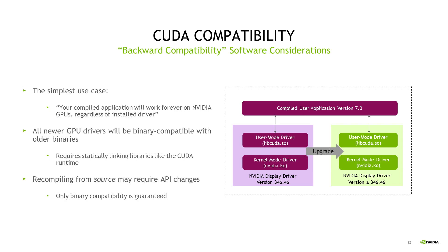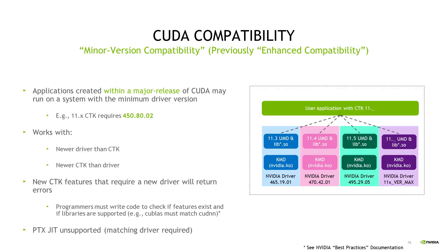This backwards compatibility also applies only to pre-compiled binaries. Source code from the past may have API changes that would require you to modify your code to call into the drivers of today. The next compatibility feature is something called minor version compatibility — you may have seen it referenced online as enhanced compatibility. This enables you to continue development on whatever version of the CTK you've been using, calling into drivers as long as the system you deploy on is within a single major version.